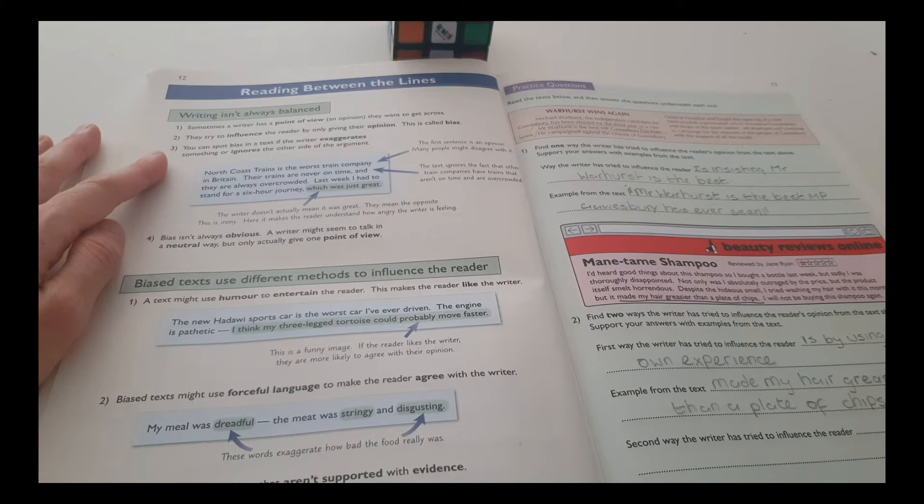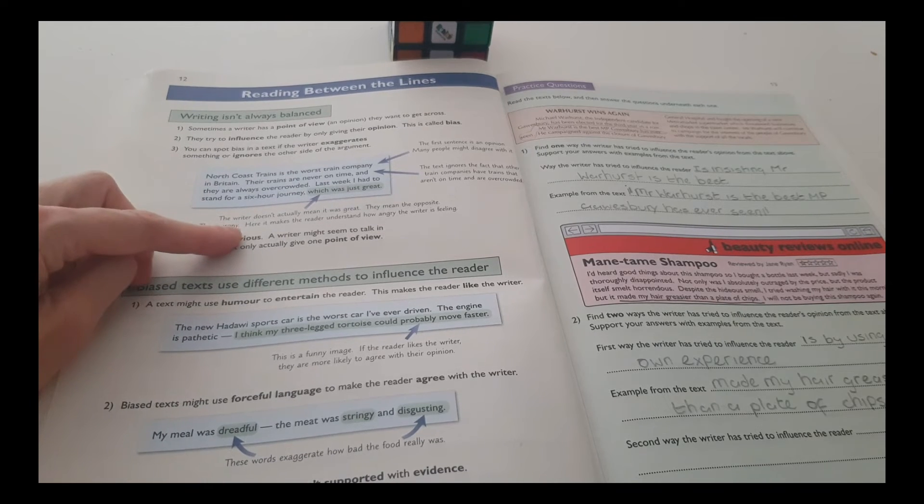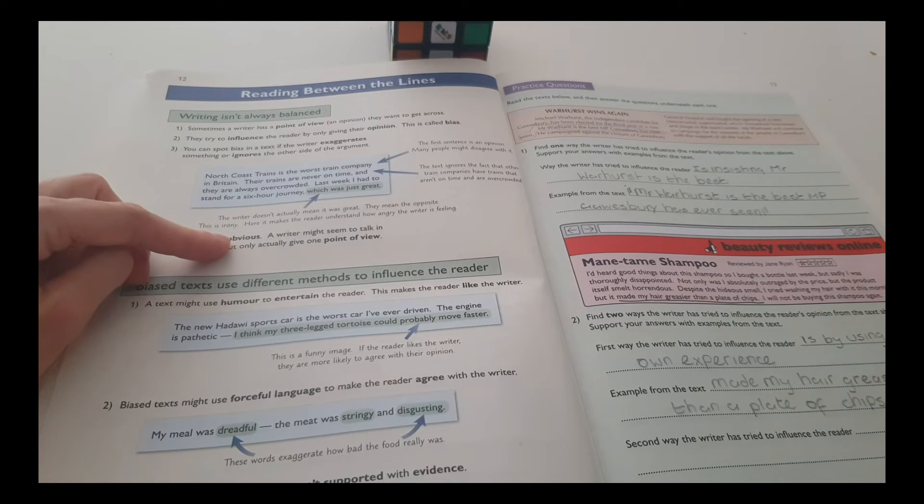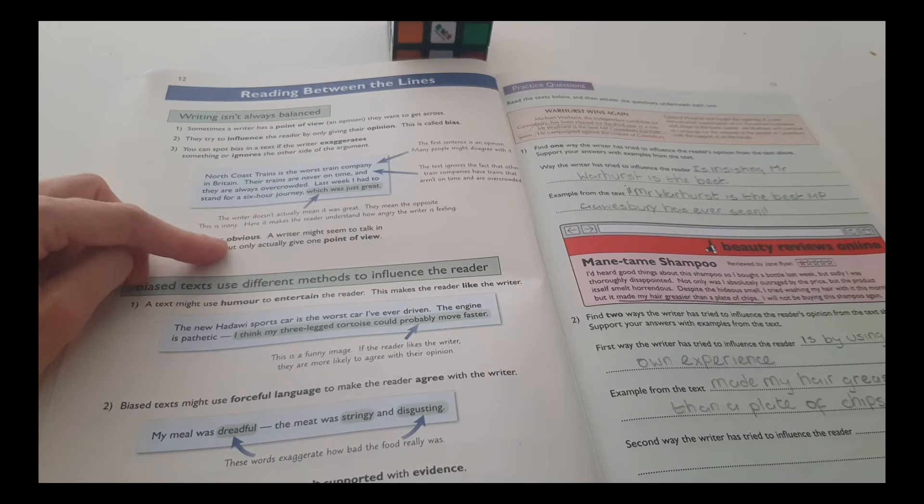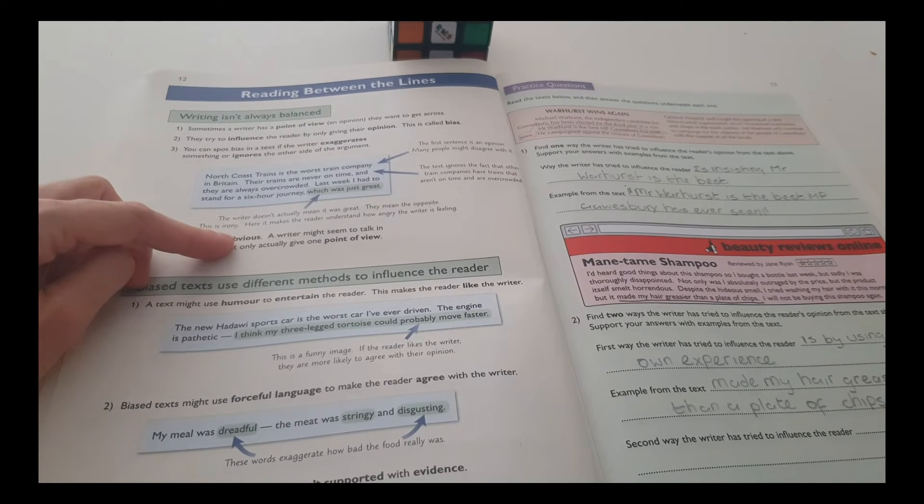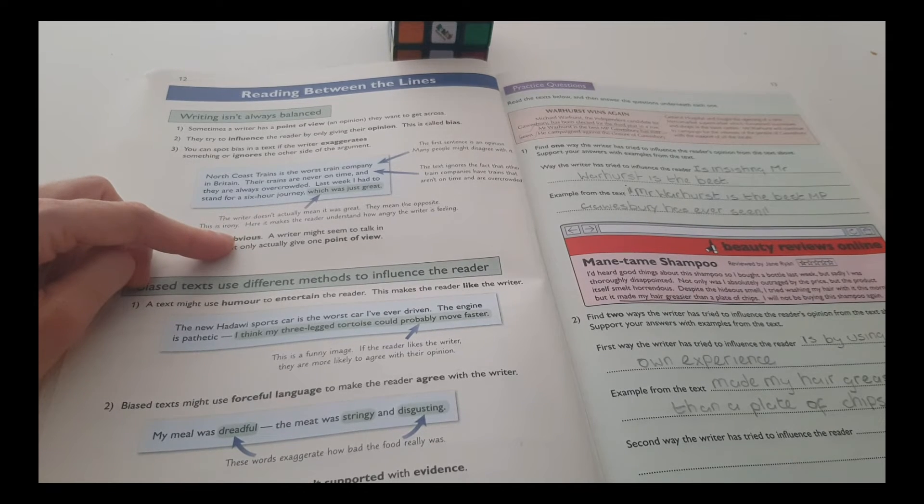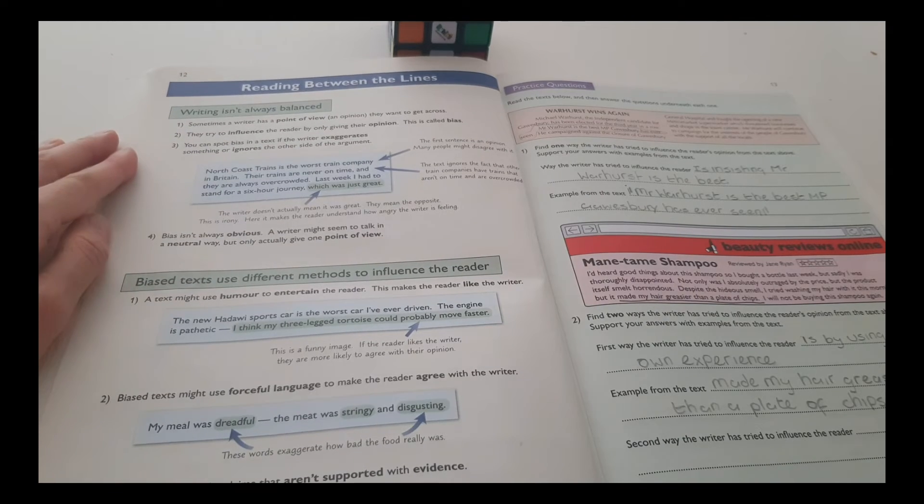The text ignores the fact that other train companies have trains that aren't on time and are overcrowded. The writer doesn't actually mean it was great. They mean the opposite. This is irony. Here it makes the reader understand how angry the writer is feeling.